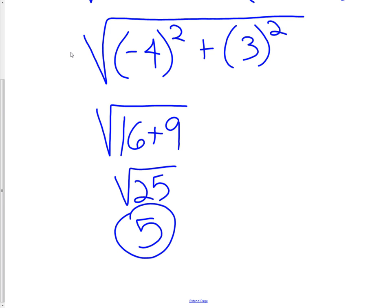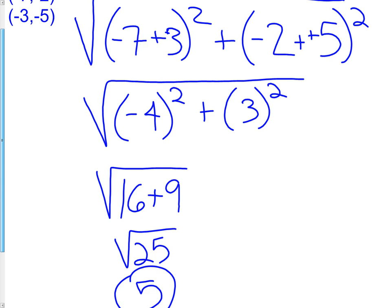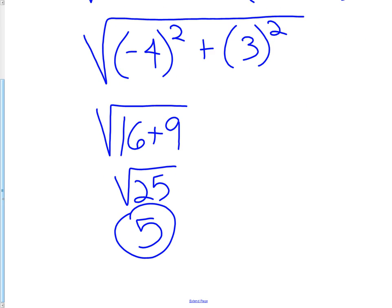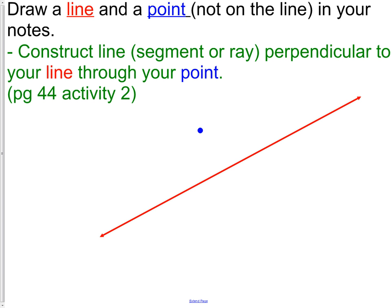What we've just found is that the distance between the points (-7, -2) and (-3, -5), the distance between them is 5. Now let's see how we could use that to calculate distance for a point and a line, or a line and a line on a coordinate plane.